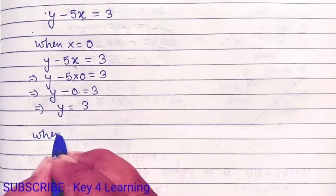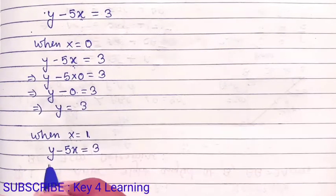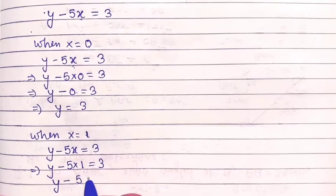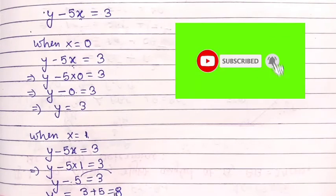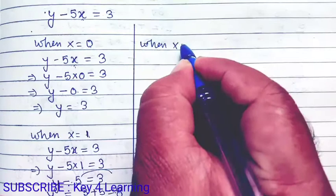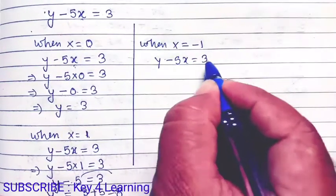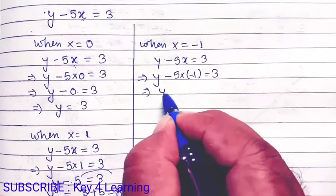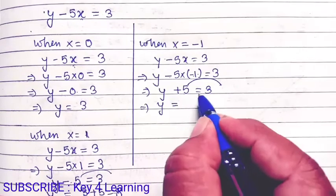अब x = 1 लेते हैं: y − 5(1) = 3, तो y − 5 = 3, इसलिए y = 8। जब x = 1 तो y = 8। एक value और लेते हैं: x = −1 लिया तो y − 5(−1) = 3, यानी y + 5 = 3, इसलिए y = 3 − 5 = −2। जब x = −1 तो y = −2।